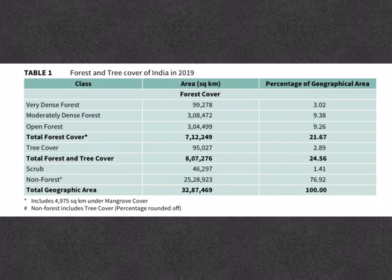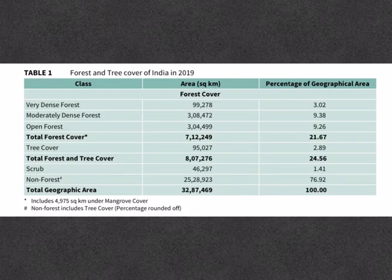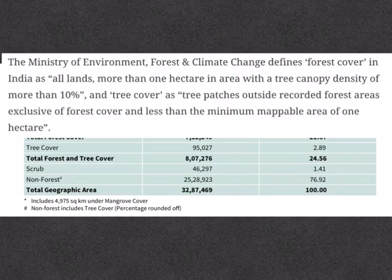As per the report, India has about 21.67% of total forest cover. Of this, moderately dense forest is at 9.38%, closely followed by open forests at 9.26%. The share of very dense forest in the total forest cover is the least at 3.02%. Forest cover refers to all lands more than 1 hectare in area with a tree canopy density of more than 10%, irrespective of ownership and legal status.